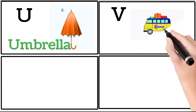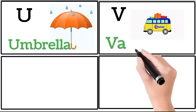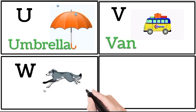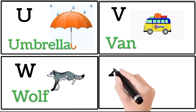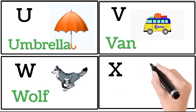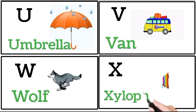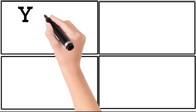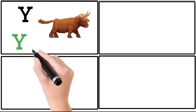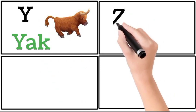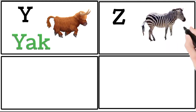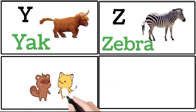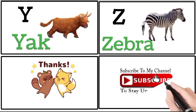V for Van. W for Wolf. X for Xylophone. Y for Yak. Please subscribe to my channel.